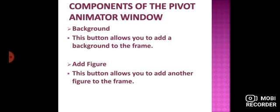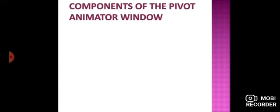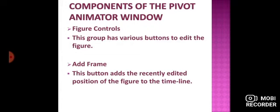Next, we have background. This button allows you to add a background to the frame. कोई भी frame के अंदर अगर आपको background चाहिए तो आप background button से ले सकते हैं. Next, we have add figure. This button allows you to add another figure to the frame — अगर एक frame के अंदर आपको दूसरा figure add करना है तो आप add figure button से add कर सकते हैं. Next, we have figure controls — this group has various buttons to add the figure. Add frame: this button adds the recently edited position of the figure to the timeline. इस button की help से जो भी आपने recently add की है position किसी figure की, वहाँ से आप उसे timeline पे add कर सकते हैं. I hope these steps are clear to everyone.